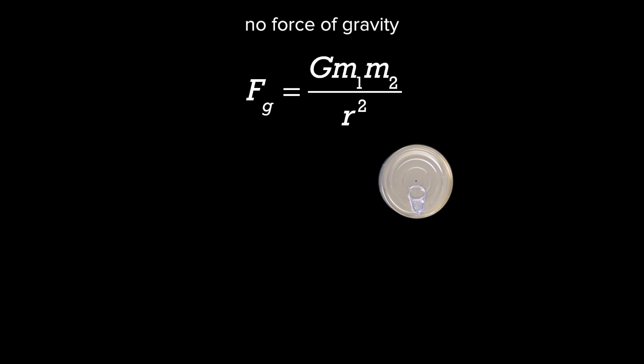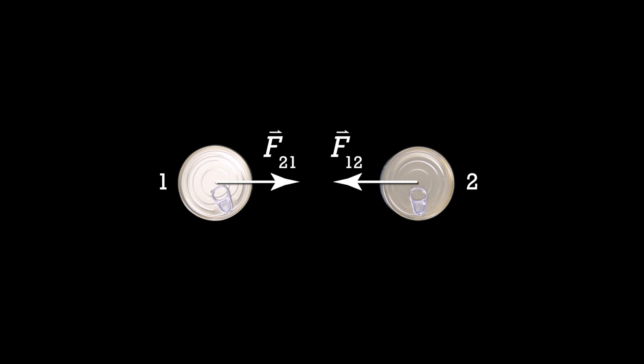Now let's add a second can of dog food. Notice now each of these cans of dog food has a force of gravitational attraction pulling it towards the other one. The force from can 1 on can 2 is pulling can 2 toward can 1. And the force from can 2 on can 1 is pulling can 1 toward can 2. Please realize these two forces form a Newton's Third Law force pair. The force from can 1 on can 2 is equal and opposite to the force from can 2 on can 1.